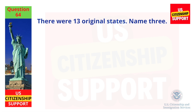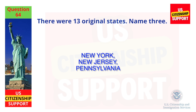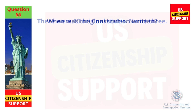There were thirteen original states. Name three. New York, New Jersey, Pennsylvania. When was the Constitution written? 1787.